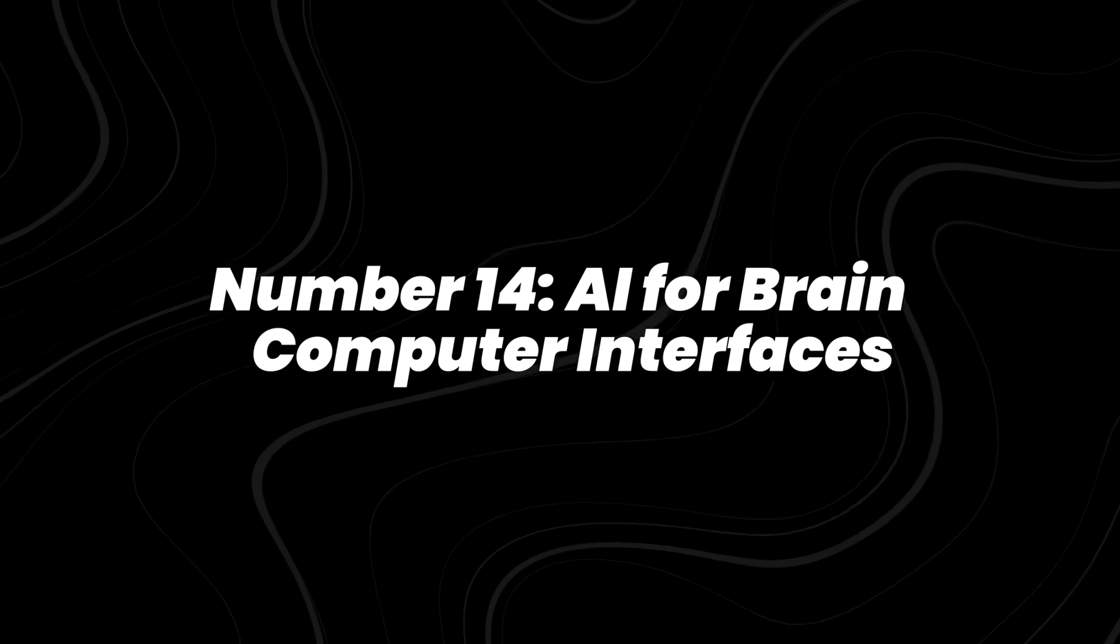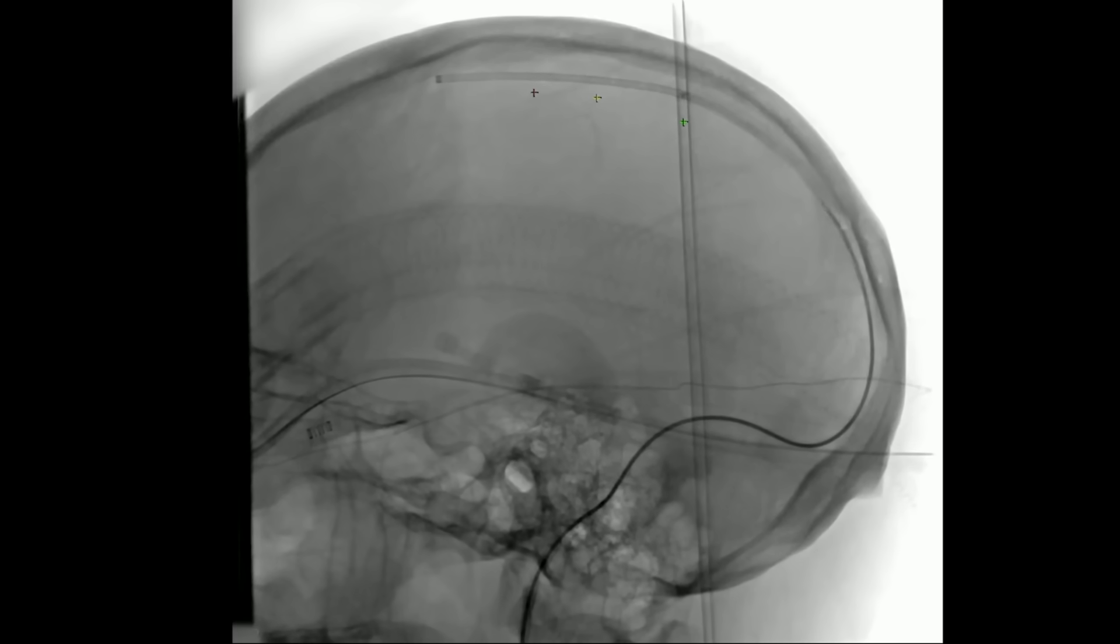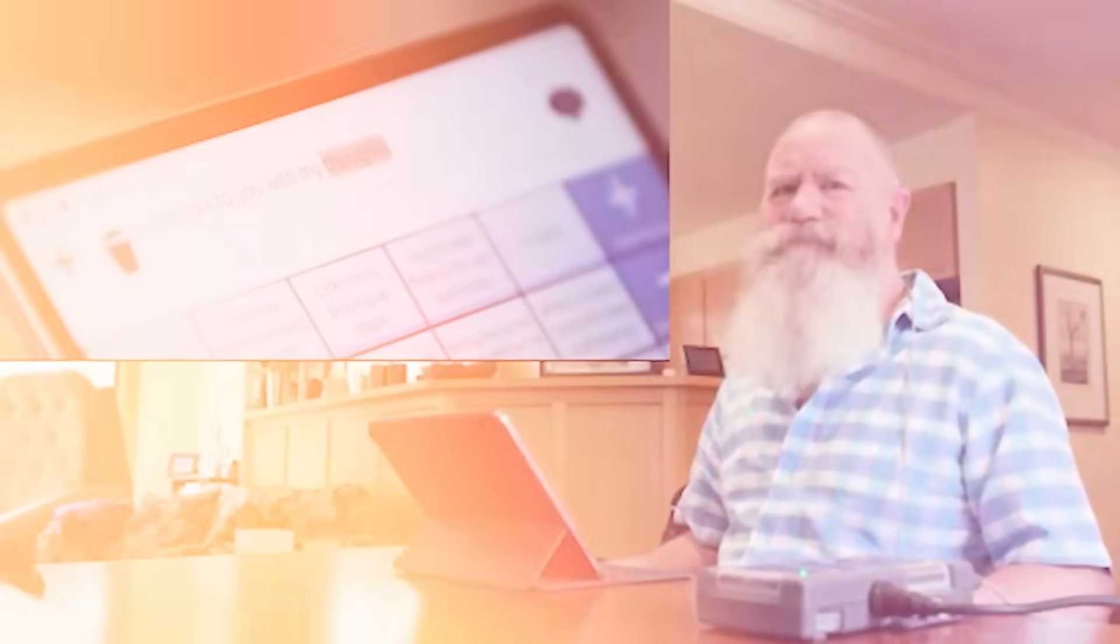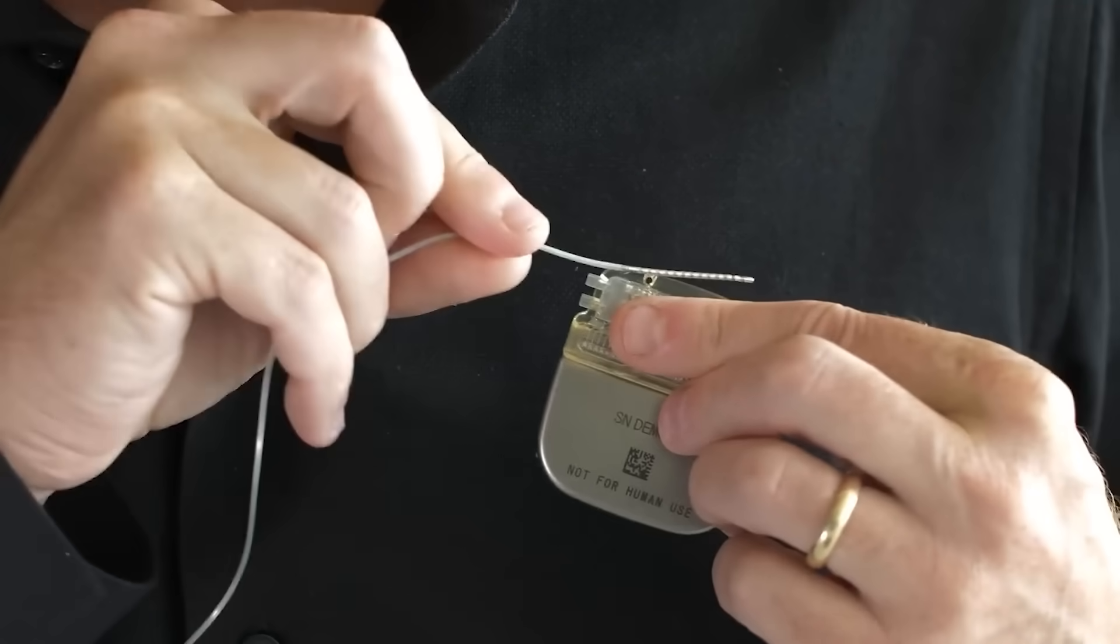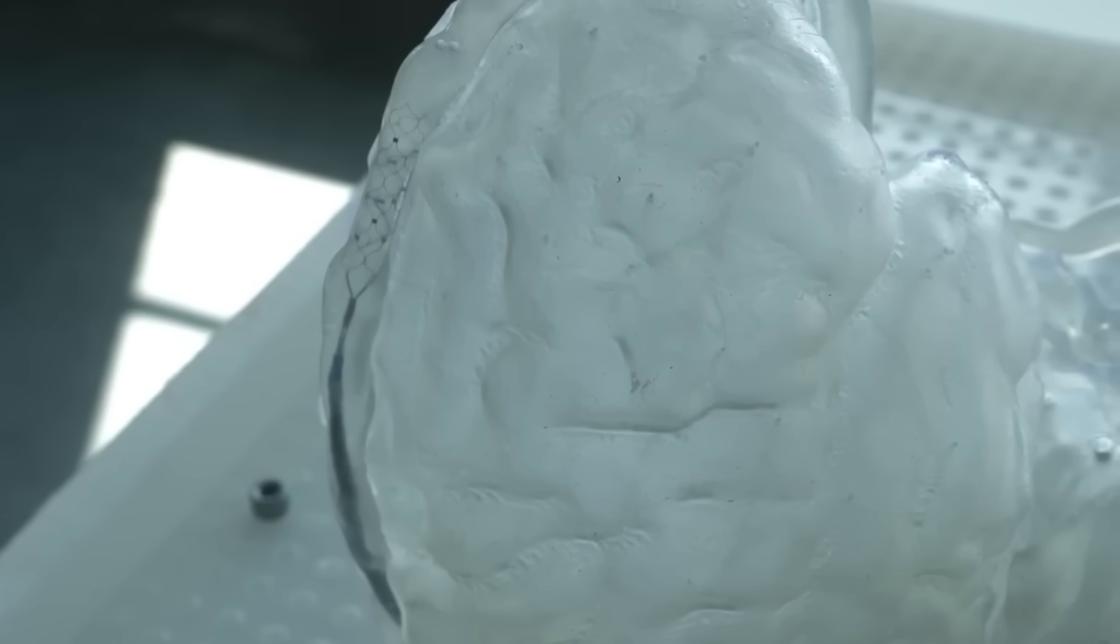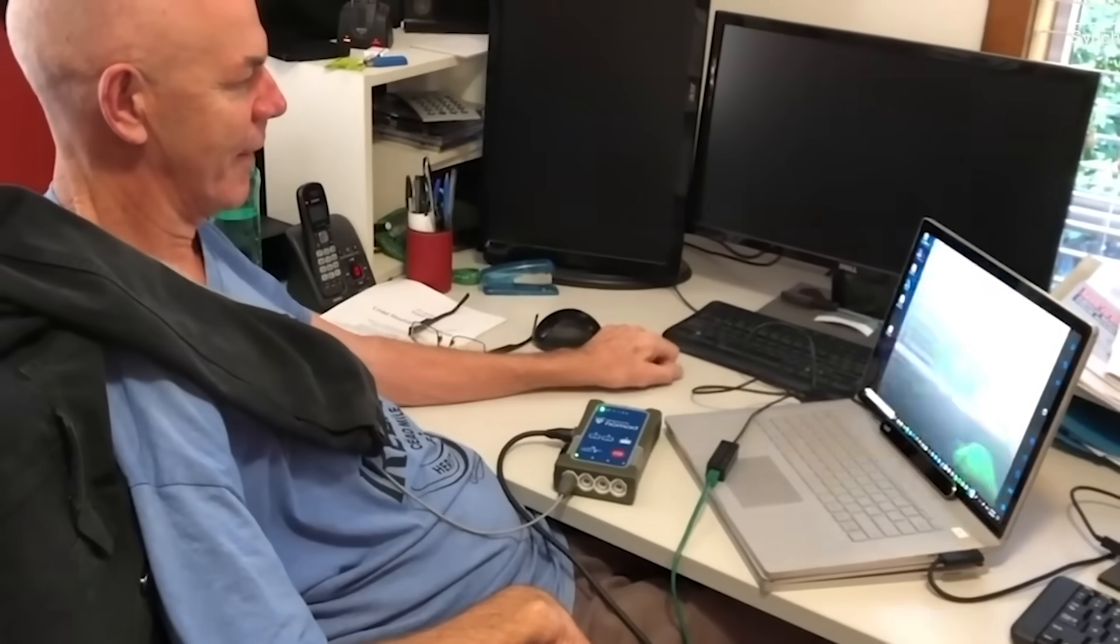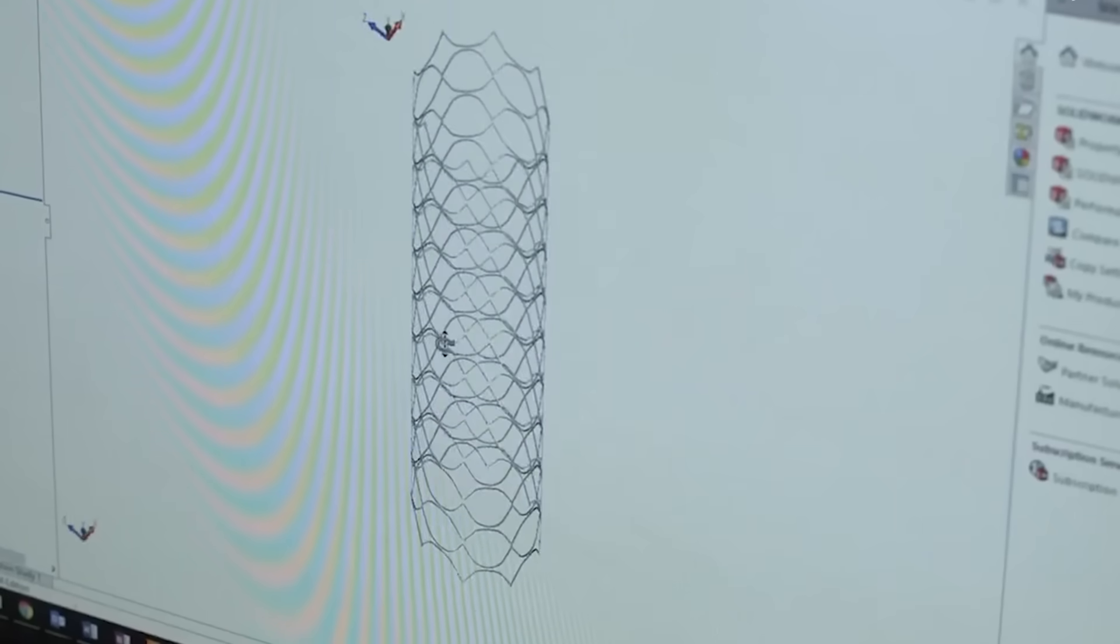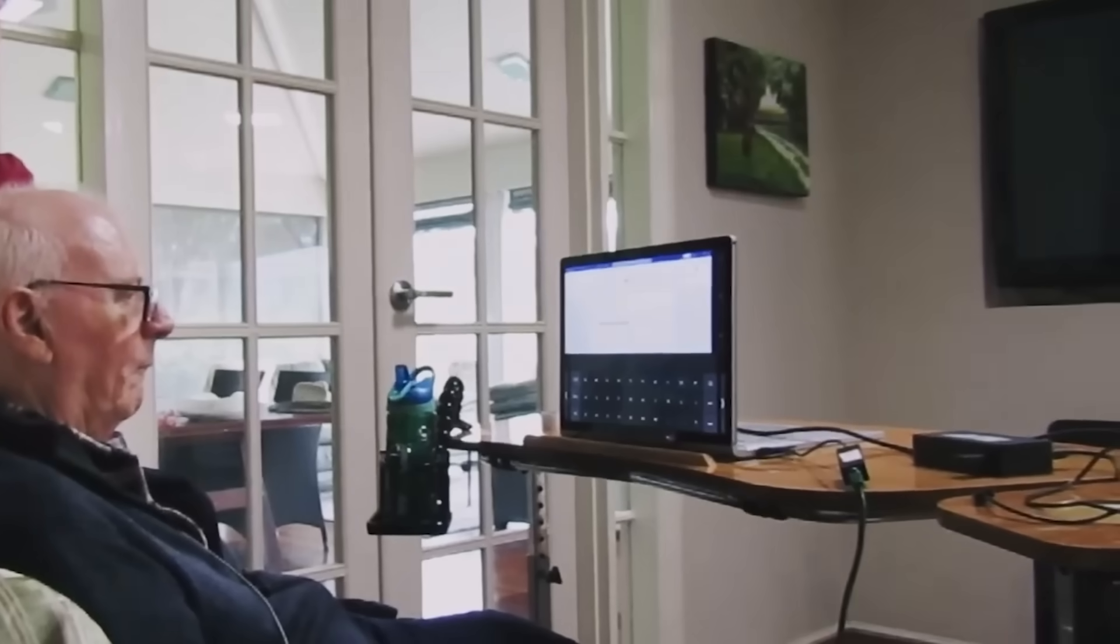Number 14, AI for brain-computer interfaces. Brain-computer interfaces are no longer just theoretical. In 2023, Stanford researchers used AI to decode brain activity into text at nearly 80 words per minute, restoring communication for paralyzed patients. At UC San Francisco, another team trained deep learning models to translate brain signals into entire sentences, opening doors for people who lost the ability to speak.